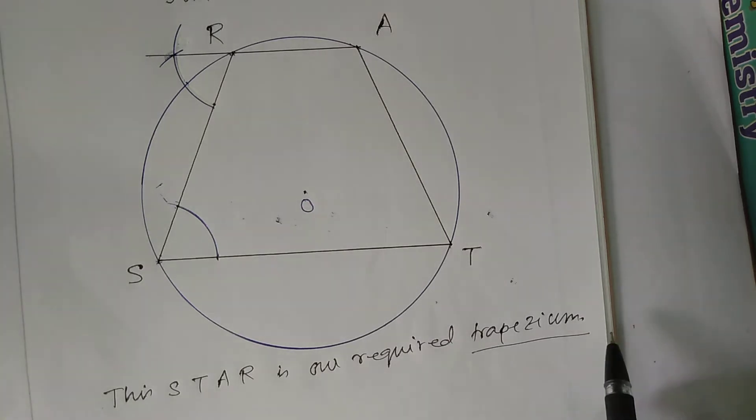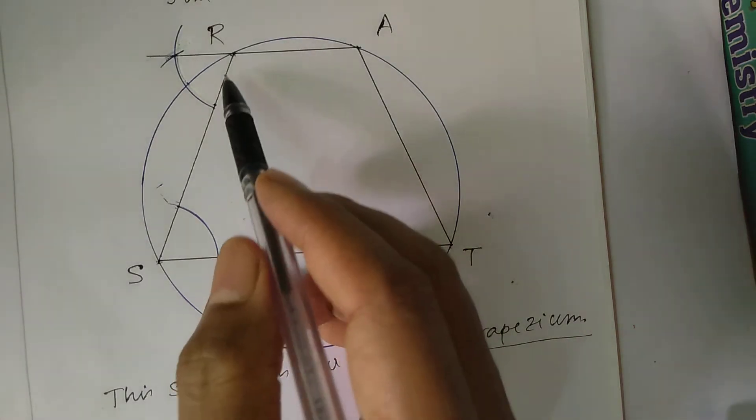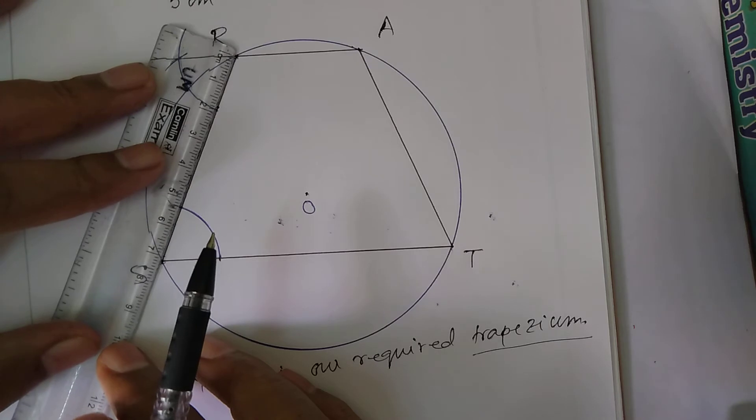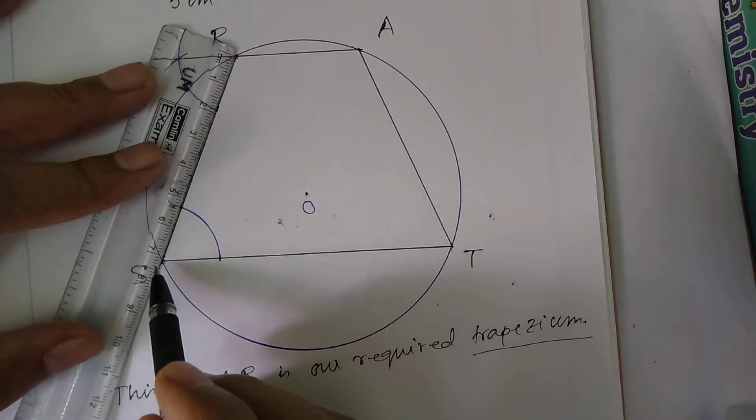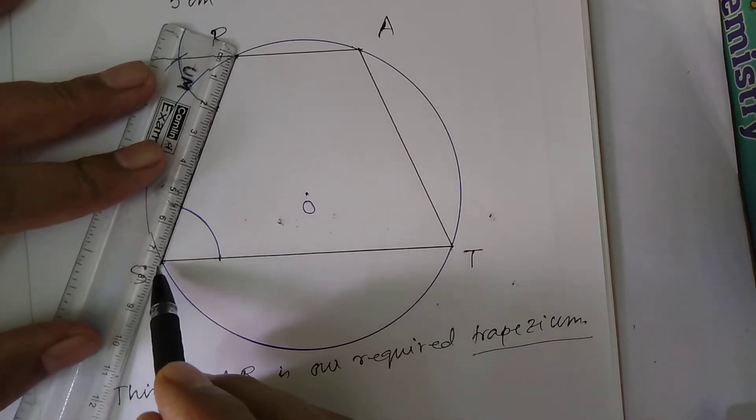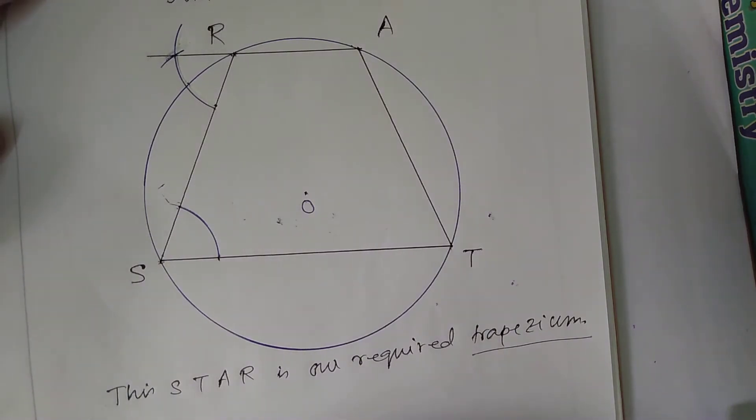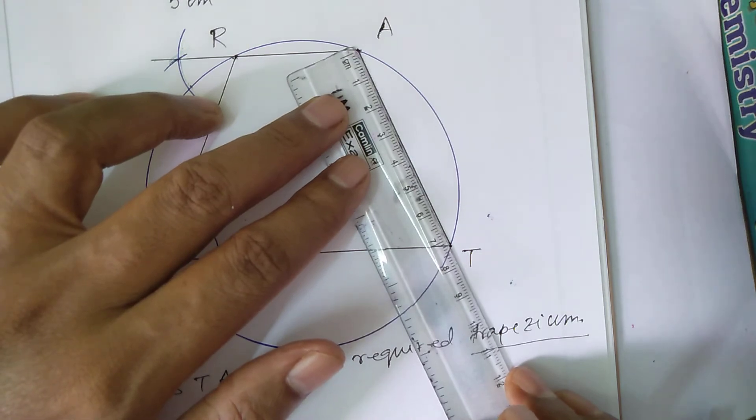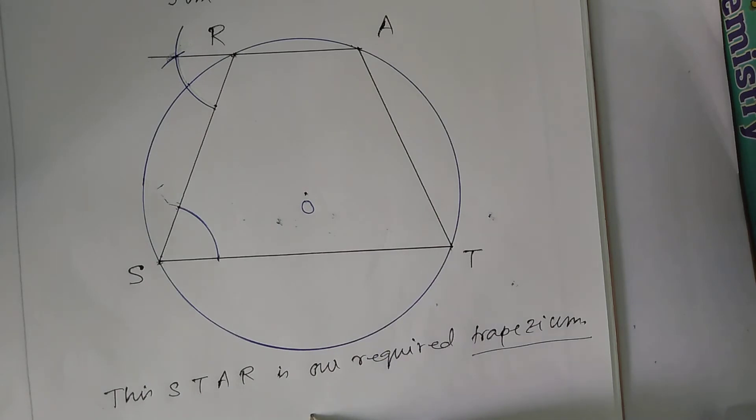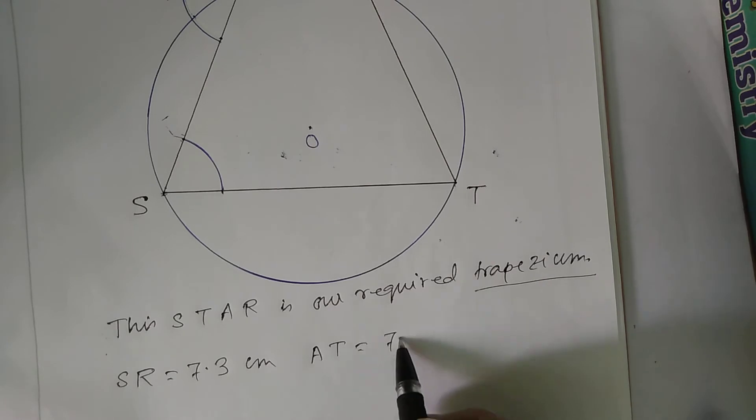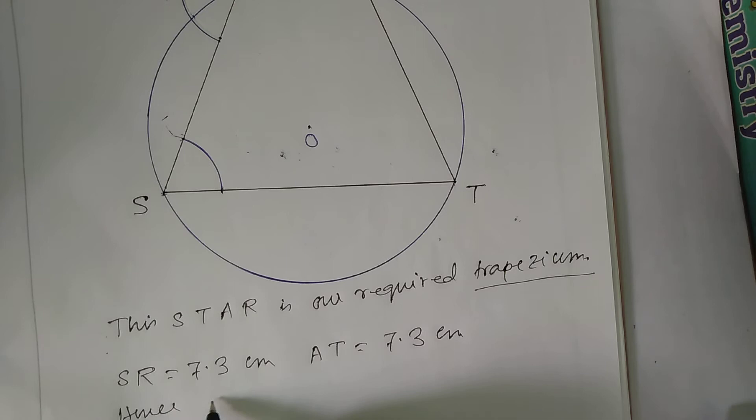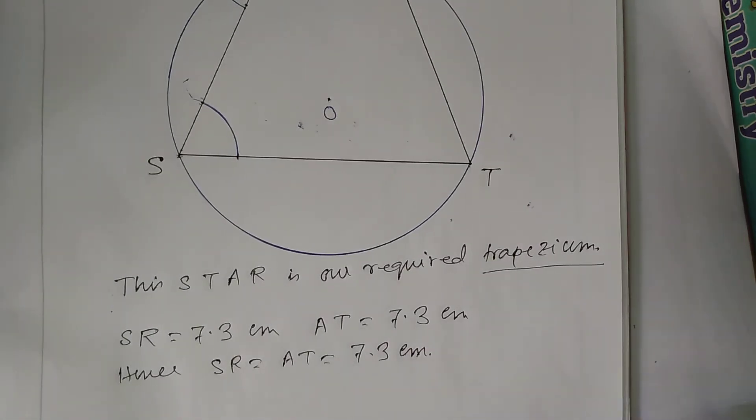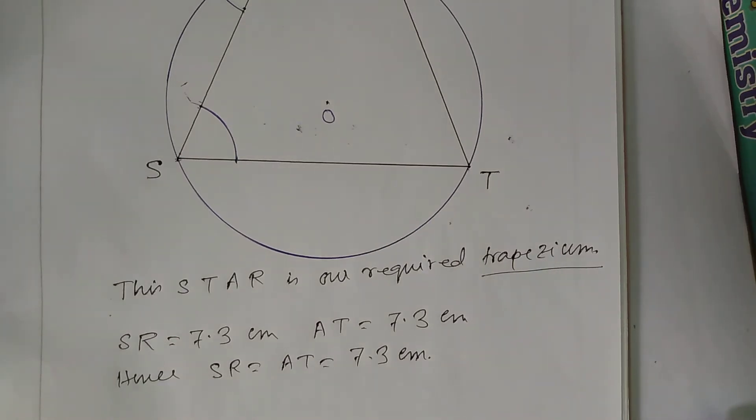Now we measure the side SR. That is 7.3. So SR equals 7.3 cm. And another oblique side is also 7.3. AT equals 7.3 cm.